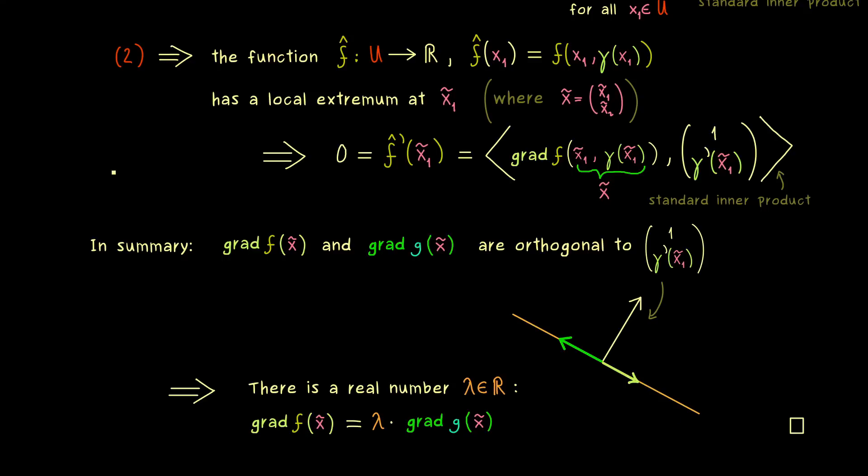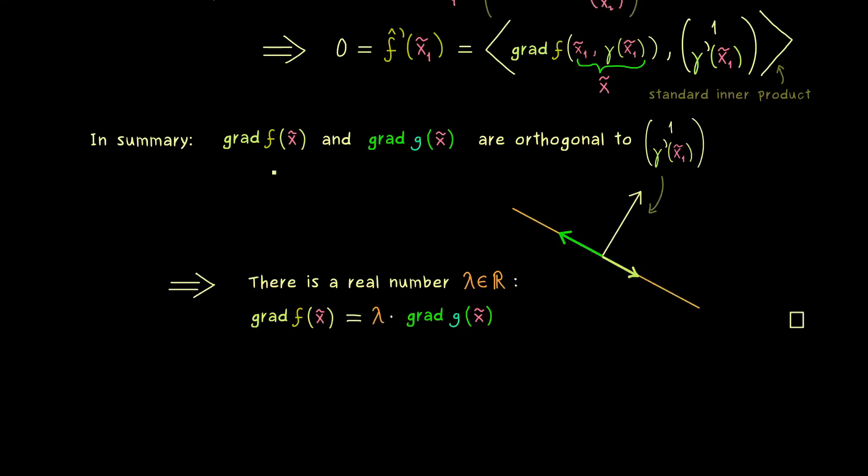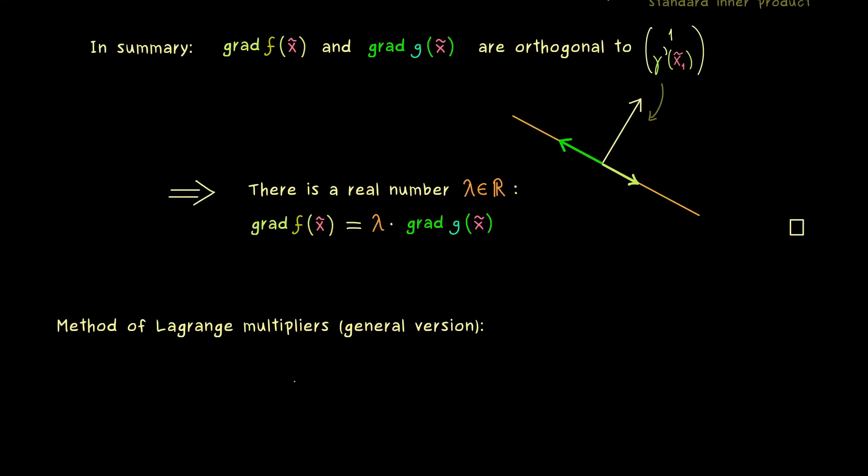Now you have seen that the method of Lagrange multipliers is not magic at all. It immediately follows from the implicit function theorem. And since we have this nice implicit function theorem not only in R² but in the general version, we can also use that to prove a more general version of the method of Lagrange multipliers as well.